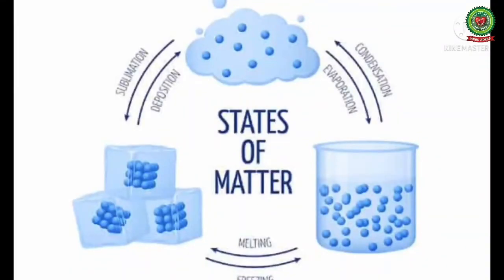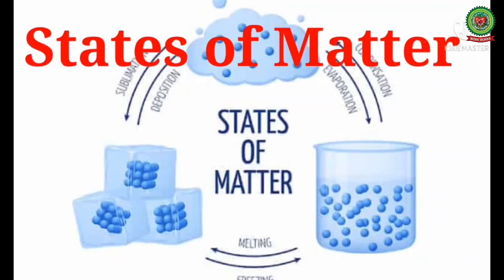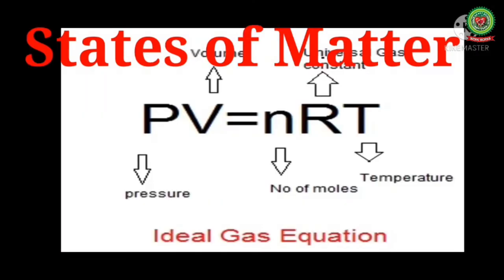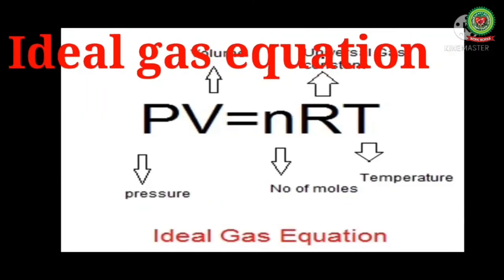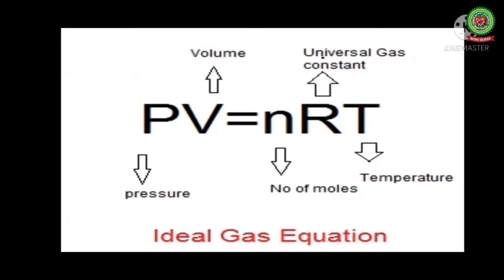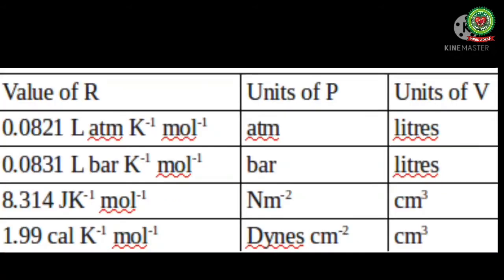Good morning students, welcome to chemistry class. We are doing chapter states of matter. In this video we will discuss the ideal gas equation PV equals nRT. This is our ideal gas equation where P is pressure, V is volume, n is number of moles, R is universal gas constant, and T is temperature.